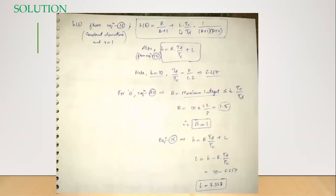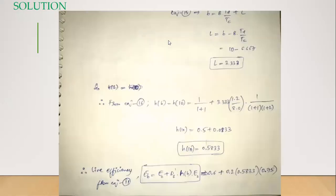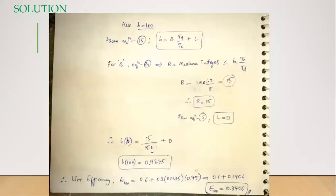The formula for h(b) is: capital B by (capital B + 1) plus L times TC/TD times 1 by (B+1)(B+2). Since L is 0, the entire second term collapses. Only B by (B+1) remains. For our case of 100, we write 15 by (15+1) plus 0, giving 15 by 16, which equals 0.9375.